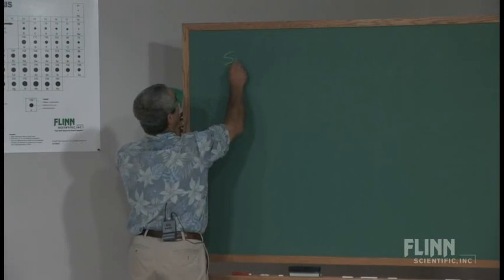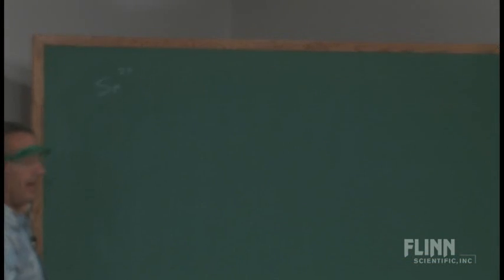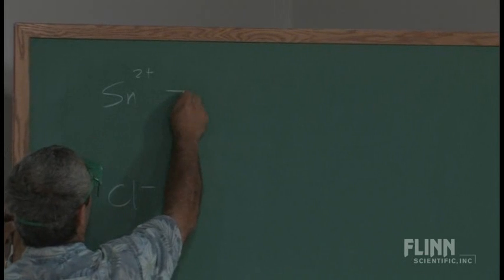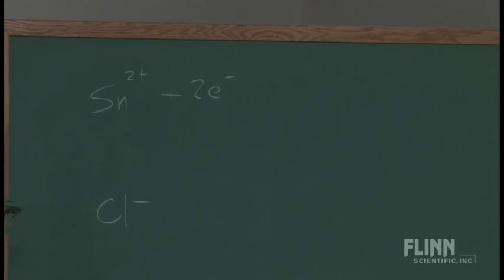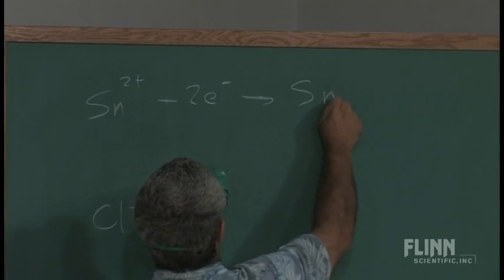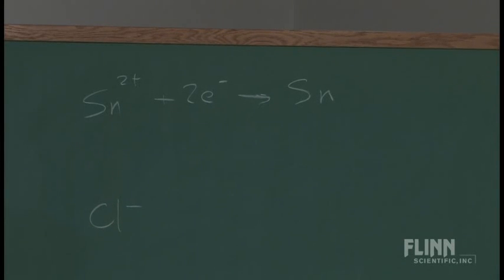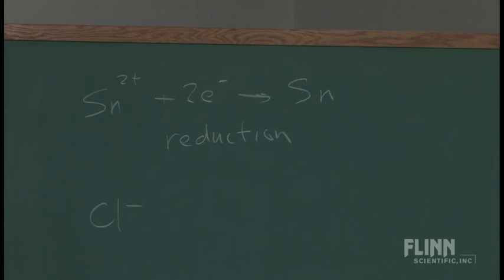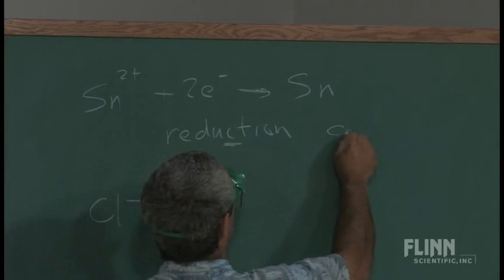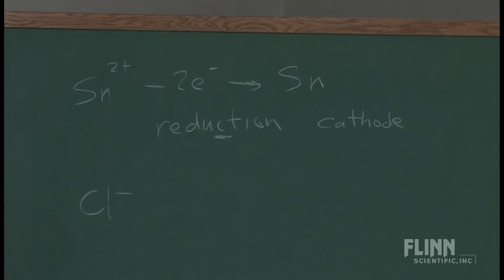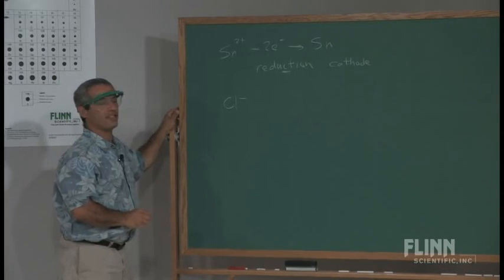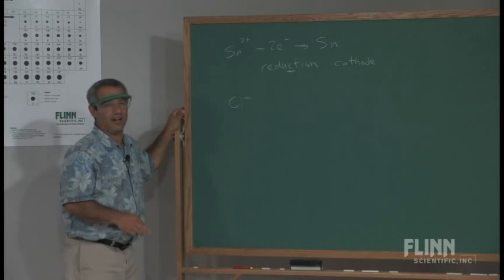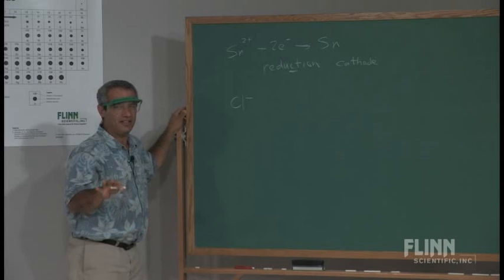At one electrode, we have the tin 2-positive ion. We've got chloride too, going on at the other electrode, but it turns out that's not the dominant reaction. The tin 2-positive ions are obviously gaining two electrons and turning into tin metal. If electrons are being gained, we call that reduction, and the name for that specific electrode is the cathode — it's where reduction takes place. Reduction is gain of electrons, and those are the beautiful crystals of tin you saw forming. Tin forms very fast crystals; silver forms too, but not nearly that quickly.